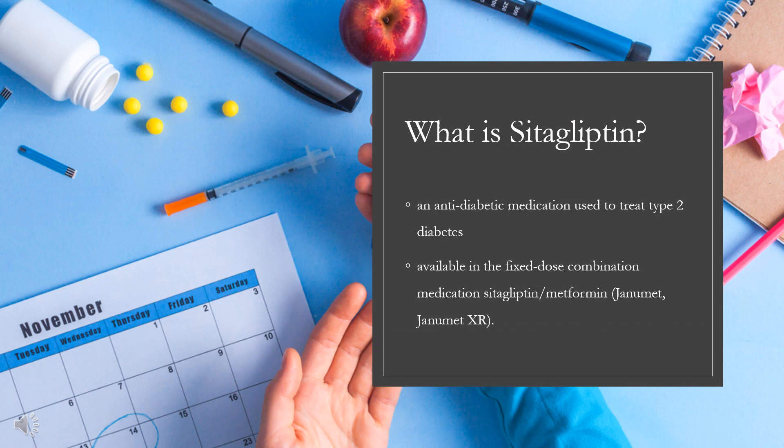What is citagliptin? Citagliptin, sold under the brand name Januvia among others, is an antidiabetic medication used to treat type 2 diabetes. In the United Kingdom it is listed as less preferred than metformin or sulfonylurea. It is taken by mouth.